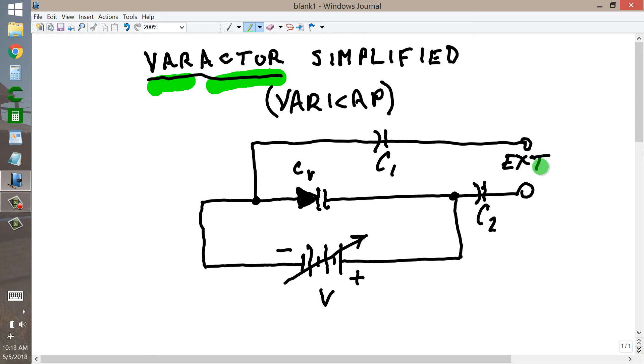And you get a variable capacitance at this point right here, which depends upon the voltage. As you increase the voltage again, the capacitance right here goes down. As you decrease the voltage, the capacitance right here goes up.